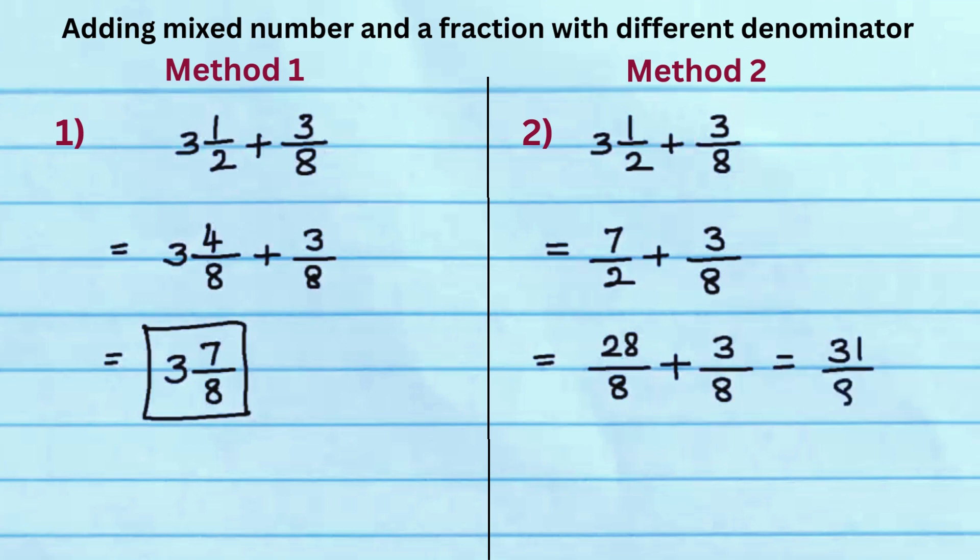Add the numerators and keep the denominator as is to get 31 over 8. Since 31 by 8 is an improper fraction, simplify it to get 3 and 7 eighths.